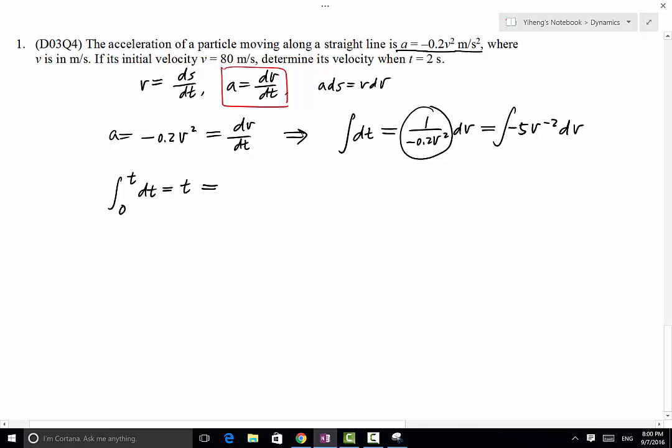The right-hand side is integrated from initial velocity, which is not 0 but 80, to current velocity, -5v^(-2) dv. Therefore, the right-hand side becomes, we integrate this part.